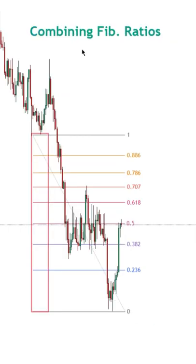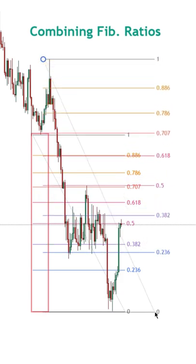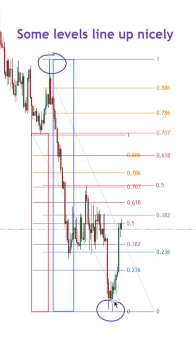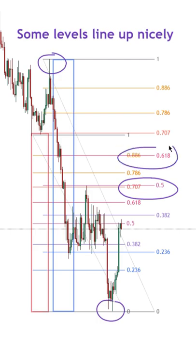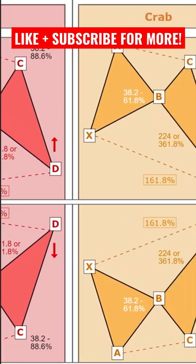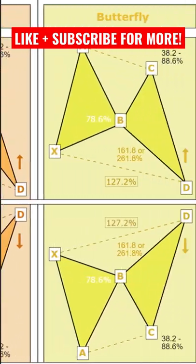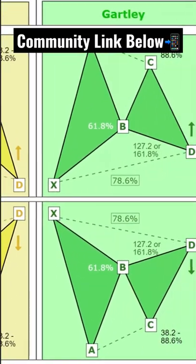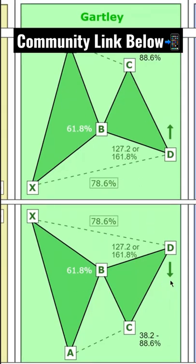The third tip ties into the last one, where if possible, it's helpful to combine different Fibonacci ratios to see which levels can line up together. And if we take a look at these two different Fibonacci ratios, we can see how some of these levels lined up pretty closely, so there's more significance to them when it comes to being respected by the price action. This concept of combining different Fibonacci ratios together is what slowly ties into trading harmonic patterns.